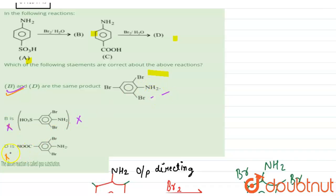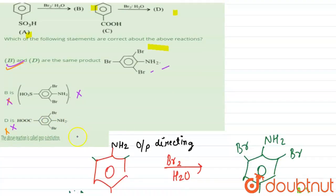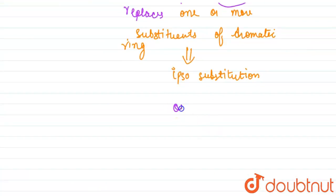It is 2,4,6-tribromoaniline. Finally, the above reaction is called ipso substitution, so statement D is correct. So the correct statements are option A and option D. Hence, these are our answers - option A and D.